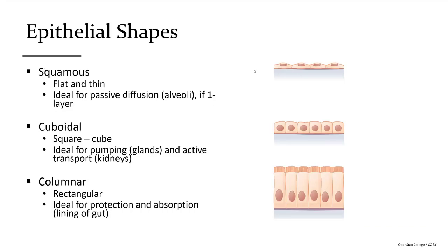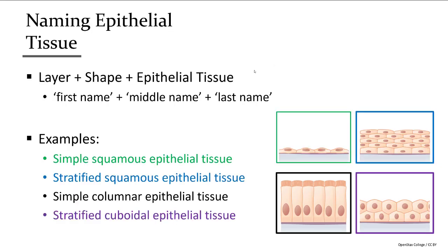The shapes again are squamous, cuboidal, or columnar. In the example in green, it's one layer of the flat one — so it's known as simple squamous epithelial tissue. In blue, stratified squamous epithelial tissue. In the lower left in black, it's one layer and it's the brick-shaped one, so it's known as simple columnar epithelial tissue. And in the lower right, stratified cuboidal epithelial tissue.